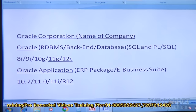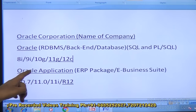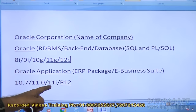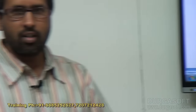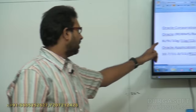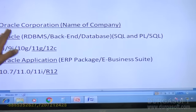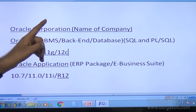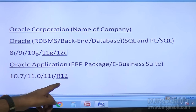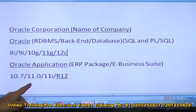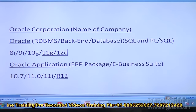Coming to Oracle applications — Oracle applications is called an ERP package, also called e-business suite. The latest version is R12. Before R12 we have 11i, before that 11.0, before that 10.7, and even before that 10.6. Students often get confused because here we have 11G and there we also have 11.0 and 11i. When I say 11G, that version belongs to Oracle the database. 11.0 and 11i are versions which belong to Oracle applications.